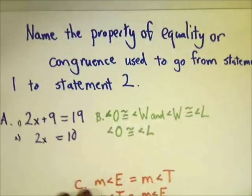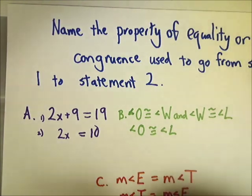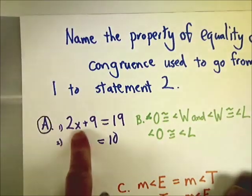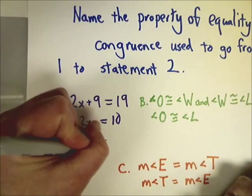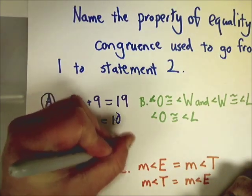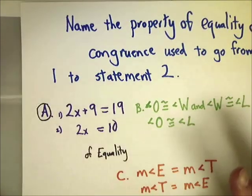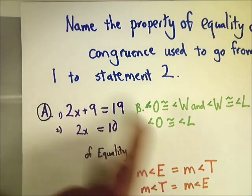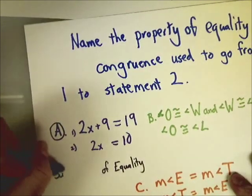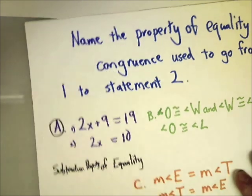Here's the type of question you'll get: name the property of equality or congruence used to go from statement 1 to statement 2. In example A, statement 1 is 2X plus 9 equals 19, and statement 2 is 2X equals 10. Since there's an equal sign, it's a property of equality. If you were solving for X, you'd subtract 9 from both sides - so it's the subtraction property of equality.